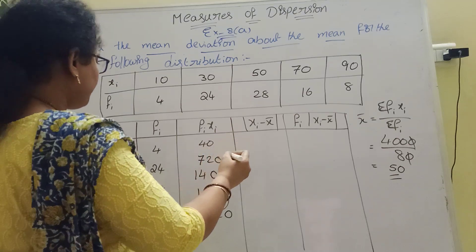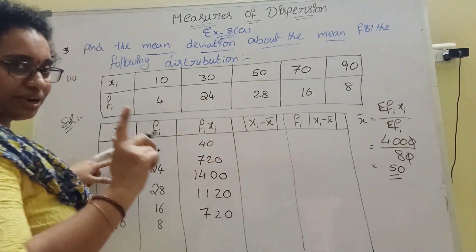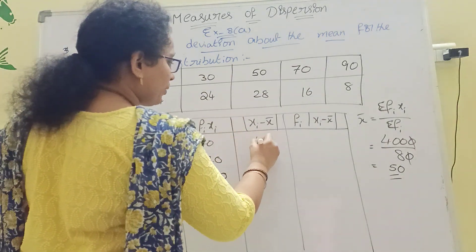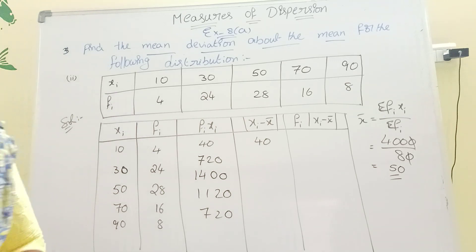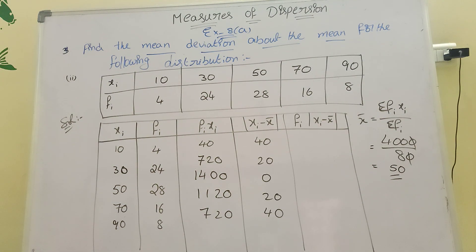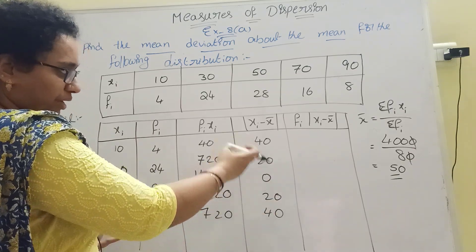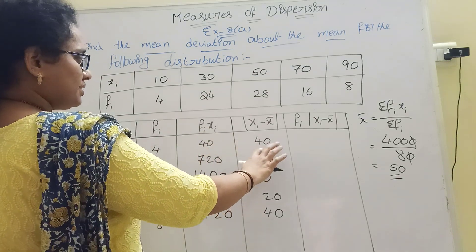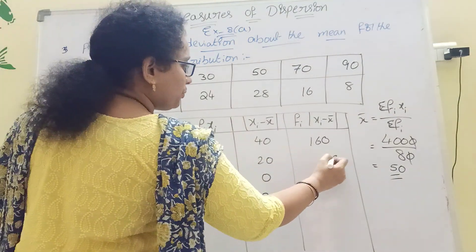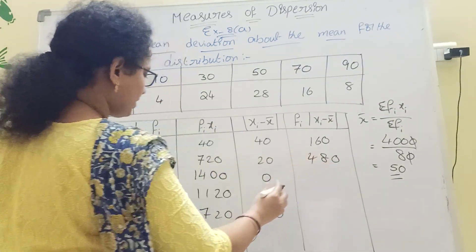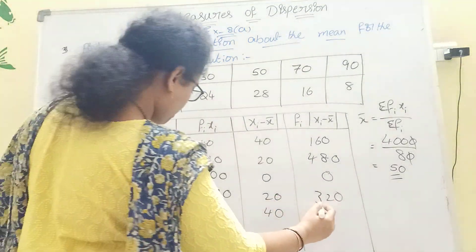Now subtract X̄ from every xi: 10 − 50 = 40 (modulus), 30 − 50 = 20, 50 − 50 = 0, 70 − 50 = 20, 90 − 50 = 40. Then multiply fi × |xi − X̄|: 4×40 = 160, 24×20 = 480, 28×0 = 0, 16×20 = 320, 8×40 = 320.